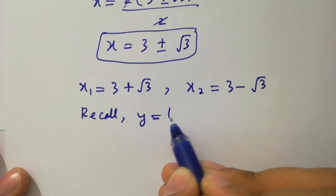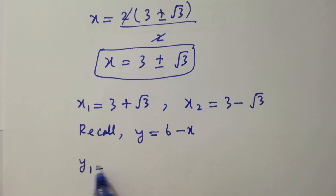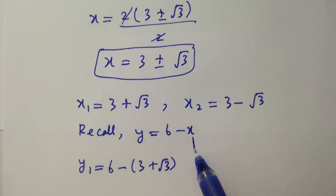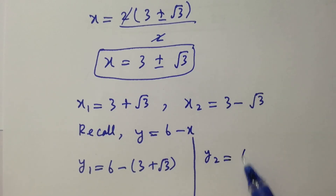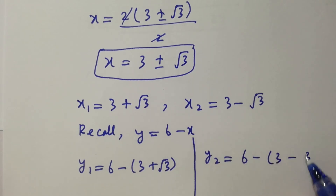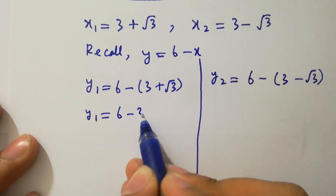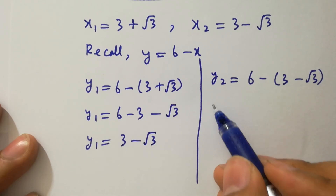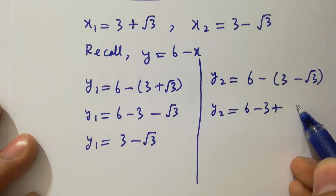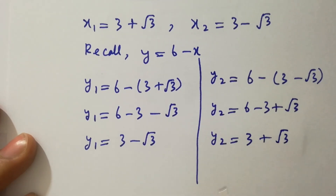Using y equal to 6 minus x: y1 equal to 6 minus (3 plus square root of 3), which gives y1 equal to 3 minus square root of 3. And y2 equal to 6 minus (3 minus square root of 3), which gives y2 equal to 3 plus square root of 3.